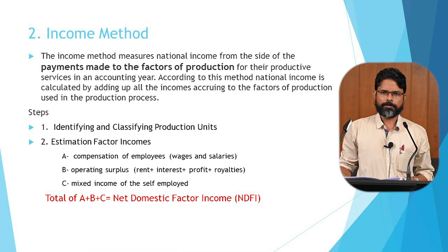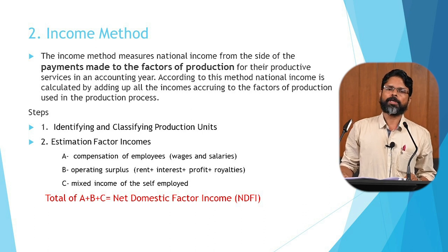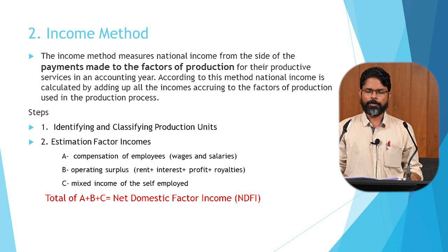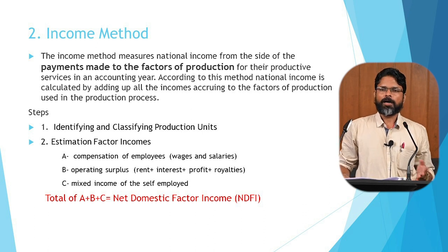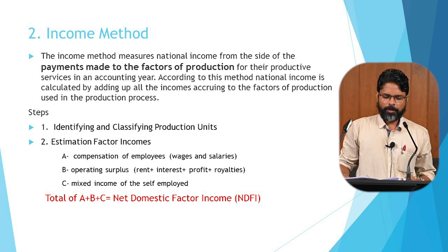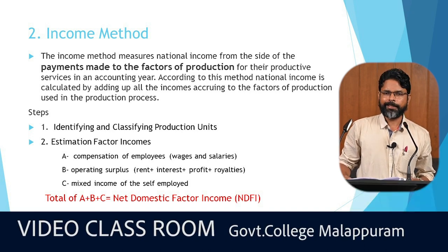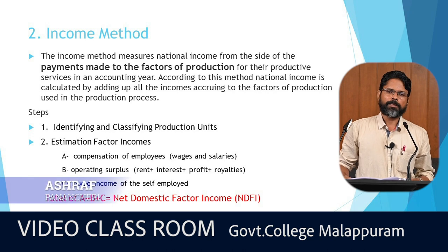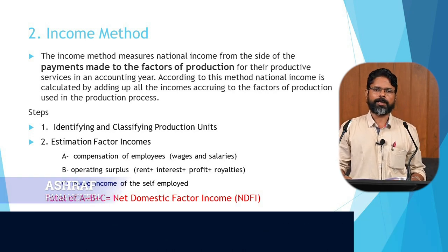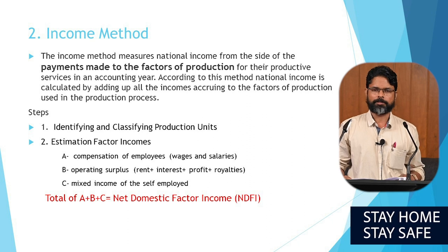The second method is income method. As already stated, we can measure national income at the production stage or income distribution stage. The producer distributes factor payments to those involved in production activities — for example, wages to labourers, rent to the landlord, interest to the capitalist, and profit as his own factor income. At that stage, the national income can be calculated using the income method. The first step is the same as the value-added method: identifying and classifying production units into primary sector, secondary sector, and tertiary sector.